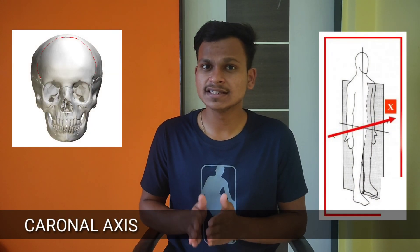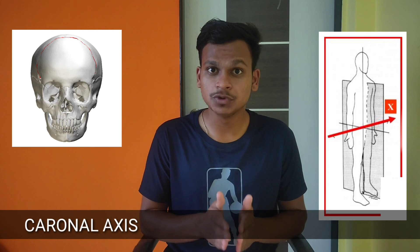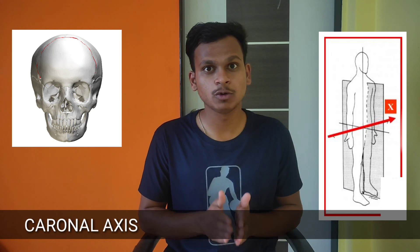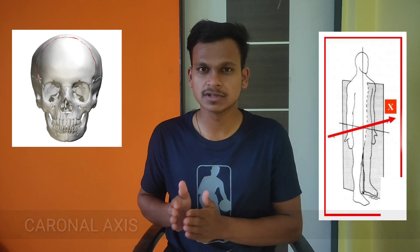The coronal axis is an axis which lies parallel to the coronal suture of the skull. The movements which take place around the coronal axis take place in the sagittal plane. It includes movements such as flexion and extension of the extremities.